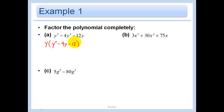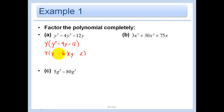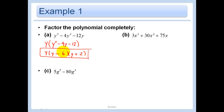Now look inside the parentheses and see if you can go further. Let's factor this: we get Y and Y. Try a negative 6 and a positive 2 — that works. And that is my final answer for factoring. I'm not asking you to solve, just factor. Done.